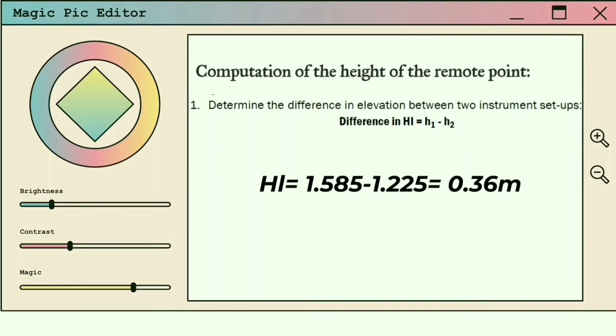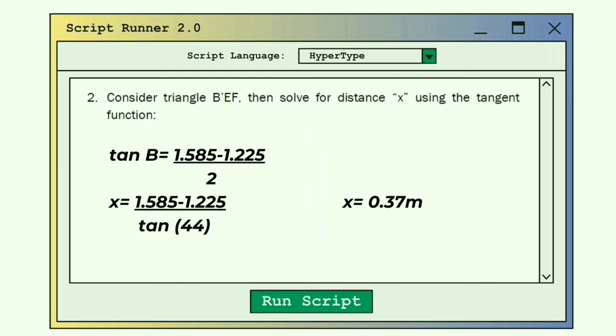Computation of the height of the remote point. First, determine the difference in elevation between two instrument setups, which is the formula: difference in height equals H₁ minus H₂. To get the computed height of the remote point, we determine the difference in elevation: 1.585 minus 1.225 equals 0.36.